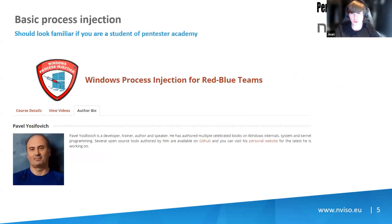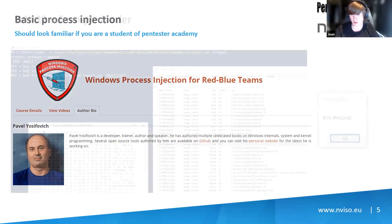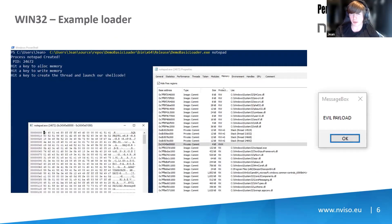If you took the course at Pentester Academy about Windows Process Injection for Red and Blue teams, you should be quite familiar with how Process Injection works. Basically, what it means is you have a basic loader that will allocate memory, write memory, and then create a new thread to launch your payload. That is how it works in a nutshell.